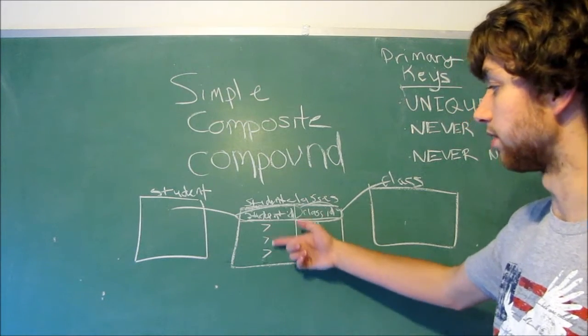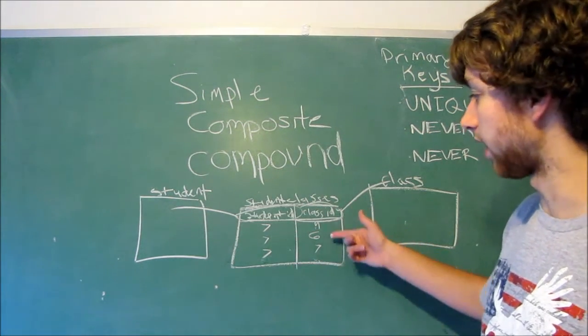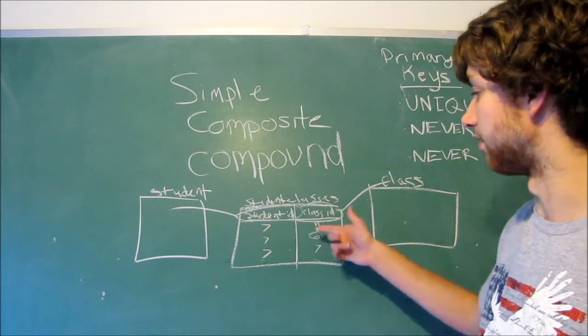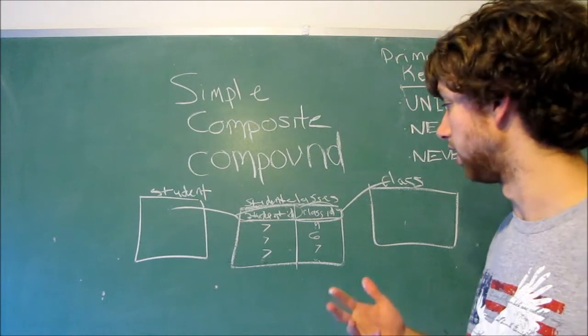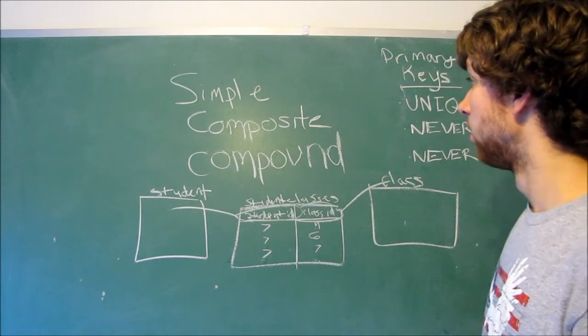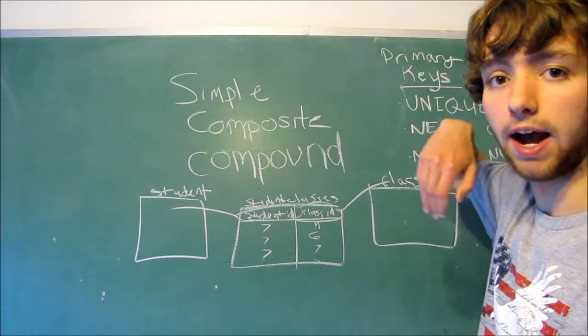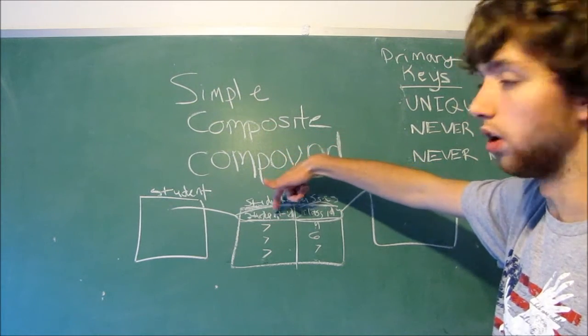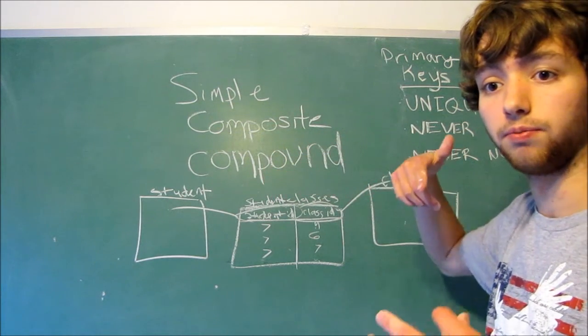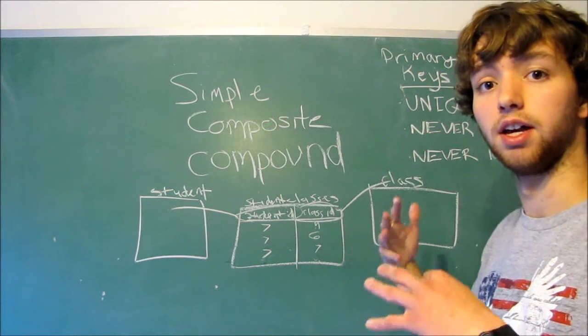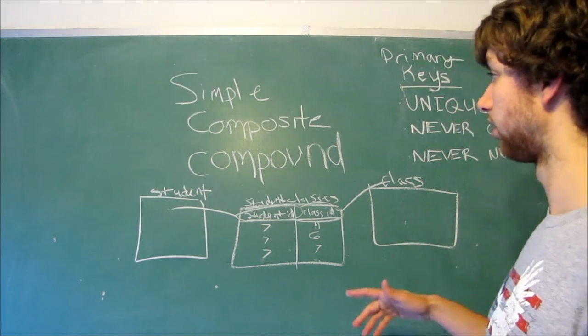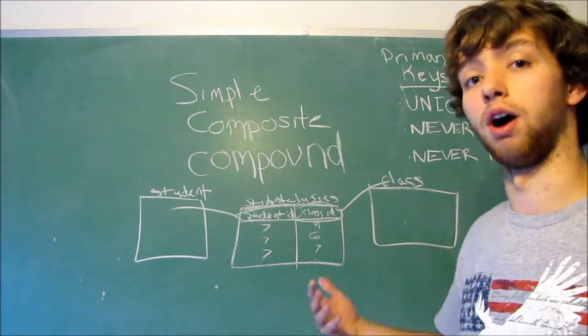Because, the combination has to be unique. We can repeat 7 on this side and we can repeat 6 on this side. But, we can't repeat the combination of 7 and 6. They have to be unique as a whole. So, composite keys, that's when you have at least one is not a key in itself. For compound, they all have to be keys.